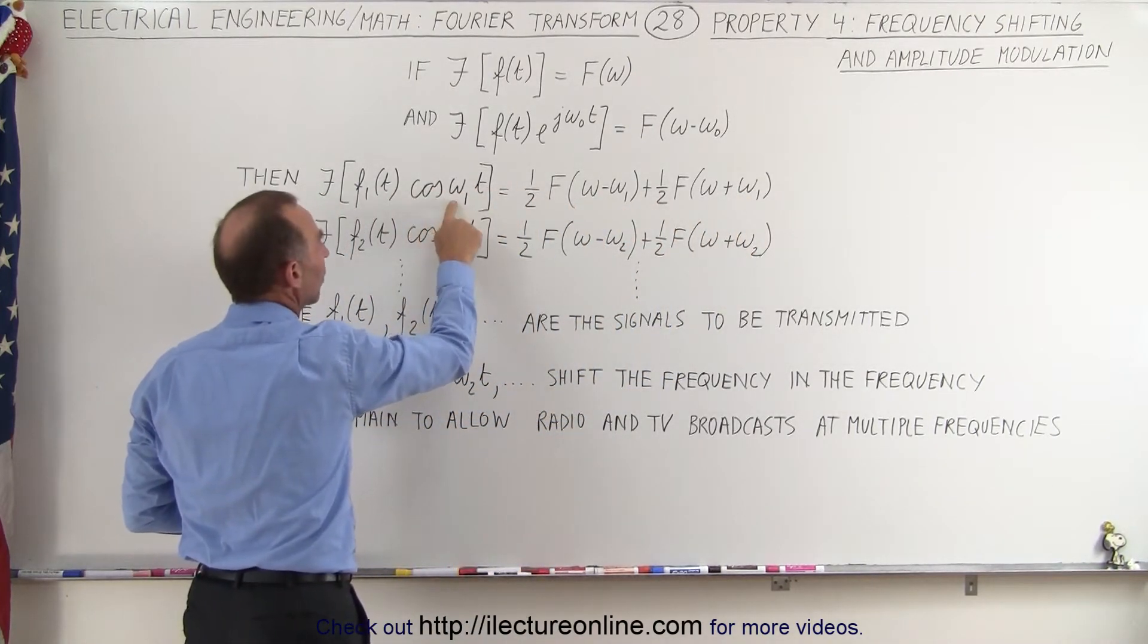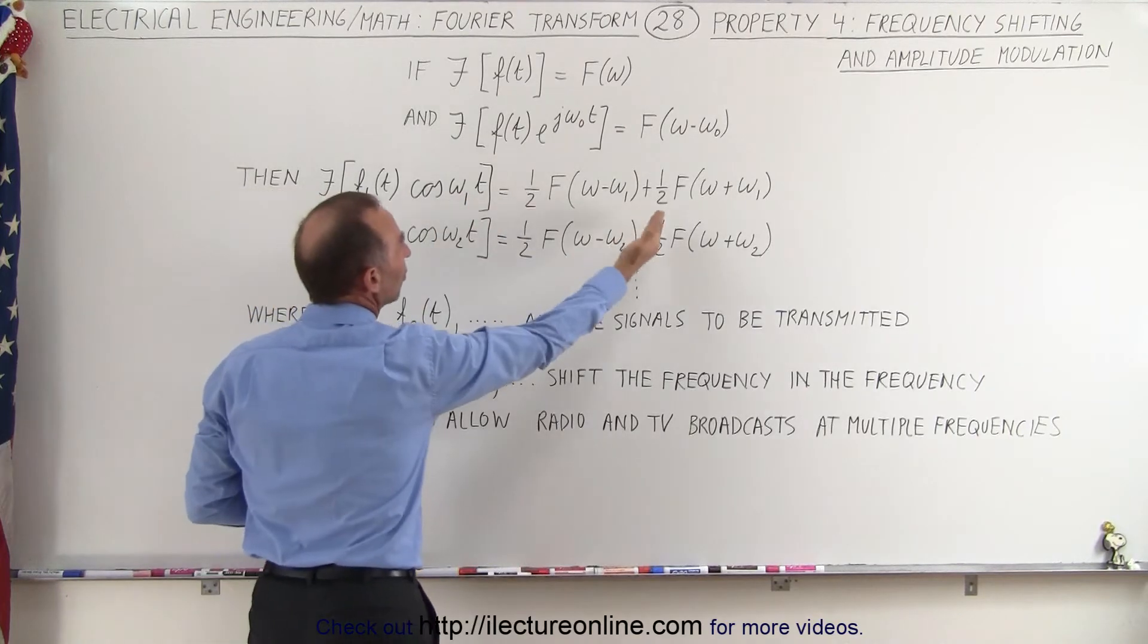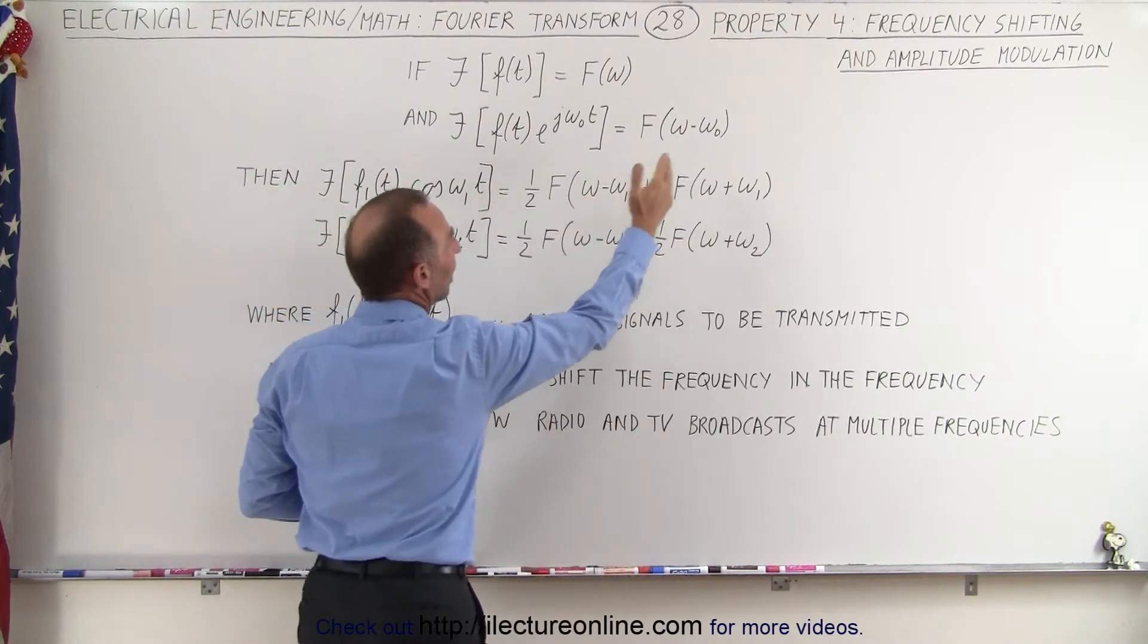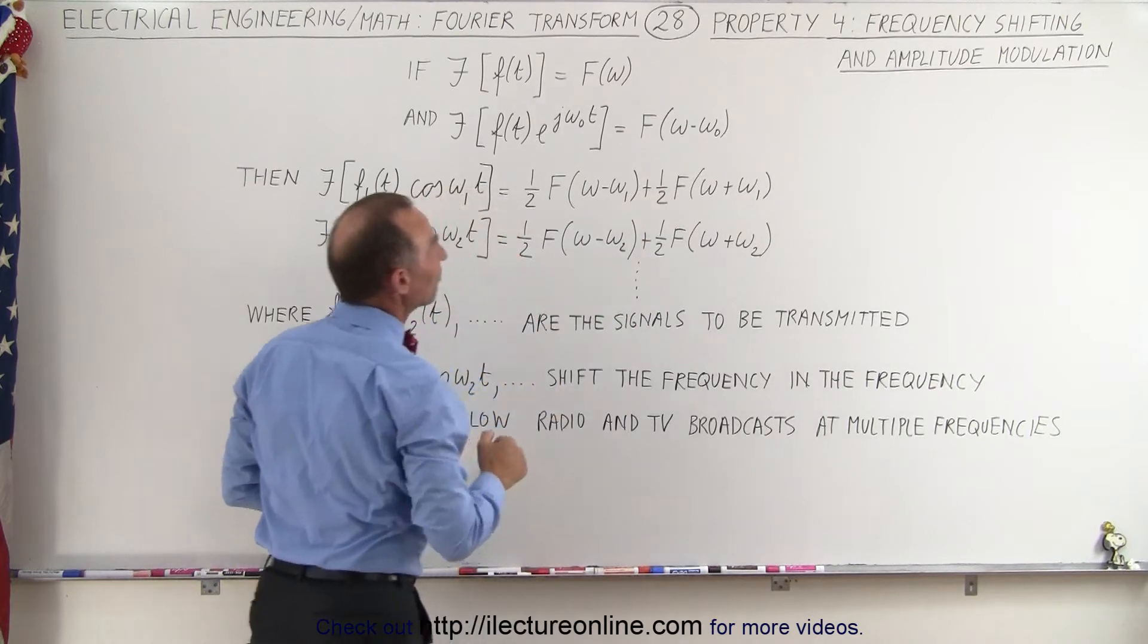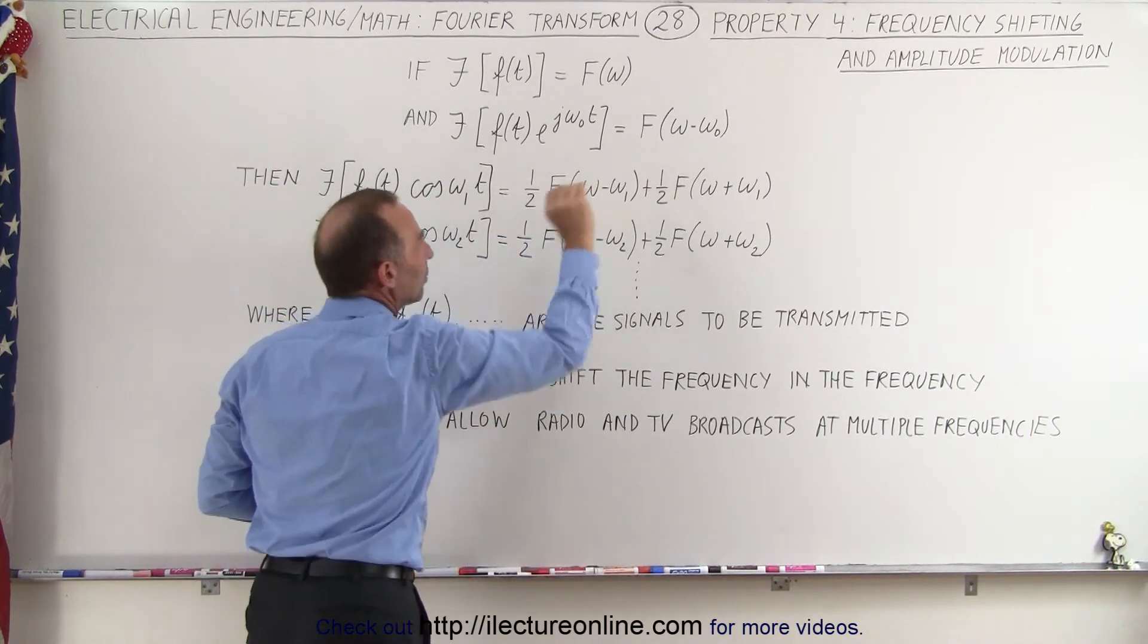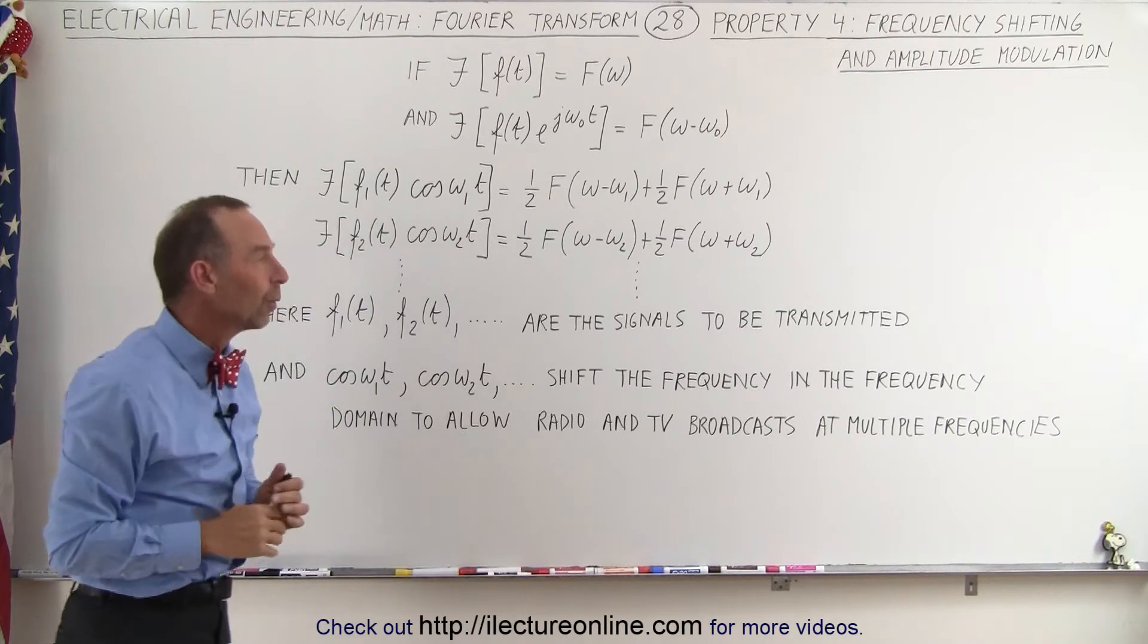So if we multiply times the cosine of omega 1, a fixed frequency, we see a shift of that frequency to the left and a shift to the right. In the frequency domain, also the amplitude will have been reduced for each one of those by one half.